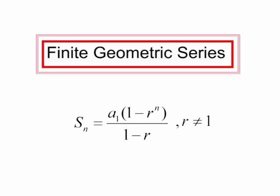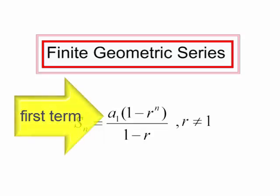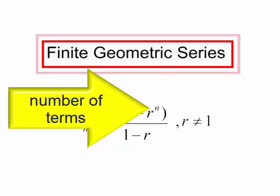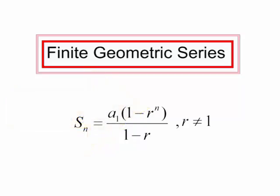So once again, the formula for finding the sum of the first n terms in a finite geometric series is: S sub n is equal to a sub 1, the first term, times 1 minus r, the common ratio, to the n — that's how many terms we are adding — all of that divided by 1 minus r. And of course r cannot equal 1.